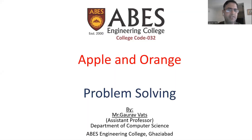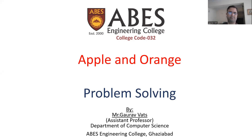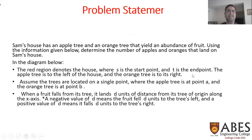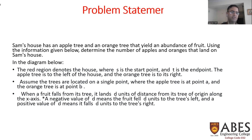My name is Gaurav and today I am going to take your class on problem solving. The topic is Apple and Orange. The problem statement says that Sam's house has an apple tree and an orange tree that yield some fruit. Using the information given below, determine the number of apples and oranges that land on Sam's house.